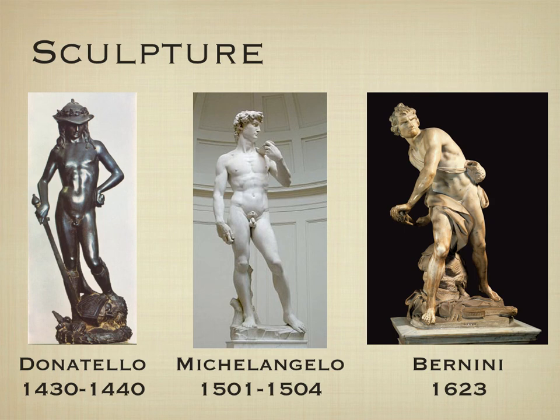Bernini's David of 1623, made from marble, represents the Baroque through its emotion and drama. Bernini chooses the moment where David is about to sling the stone — his body is twisted as far back as possible, ready to whip around and release the stone. This represents the grandeur, opulence, and emotion of the Baroque. The work has so much movement that when viewers go to see it, they can tell the trajectory the rock will take and won't stand there because it seems so lifelike.